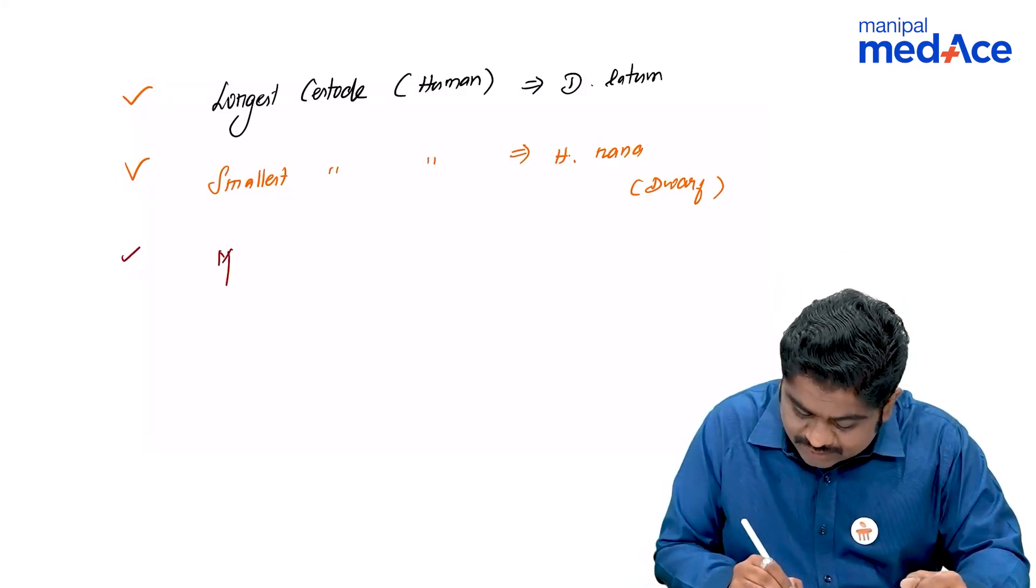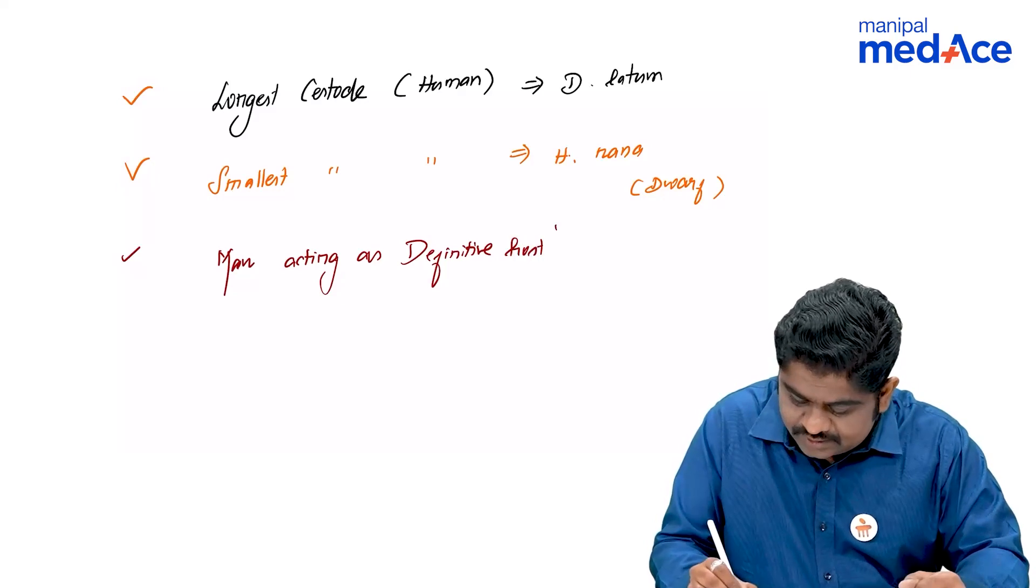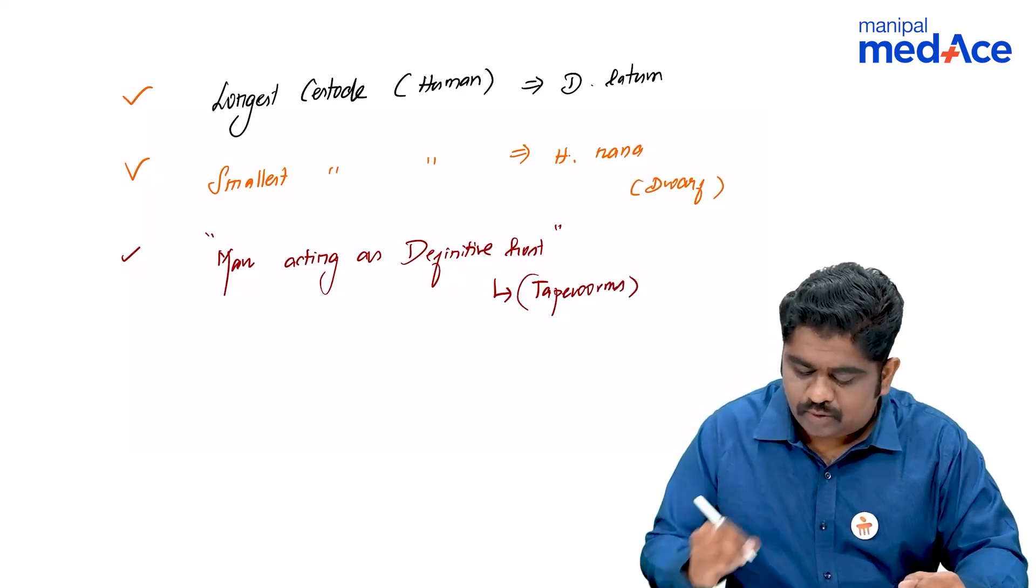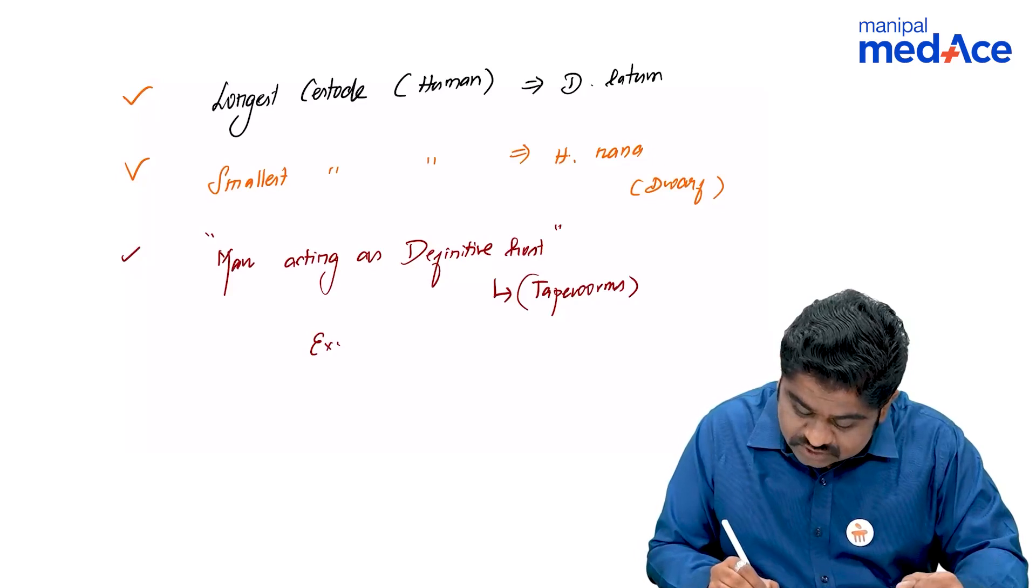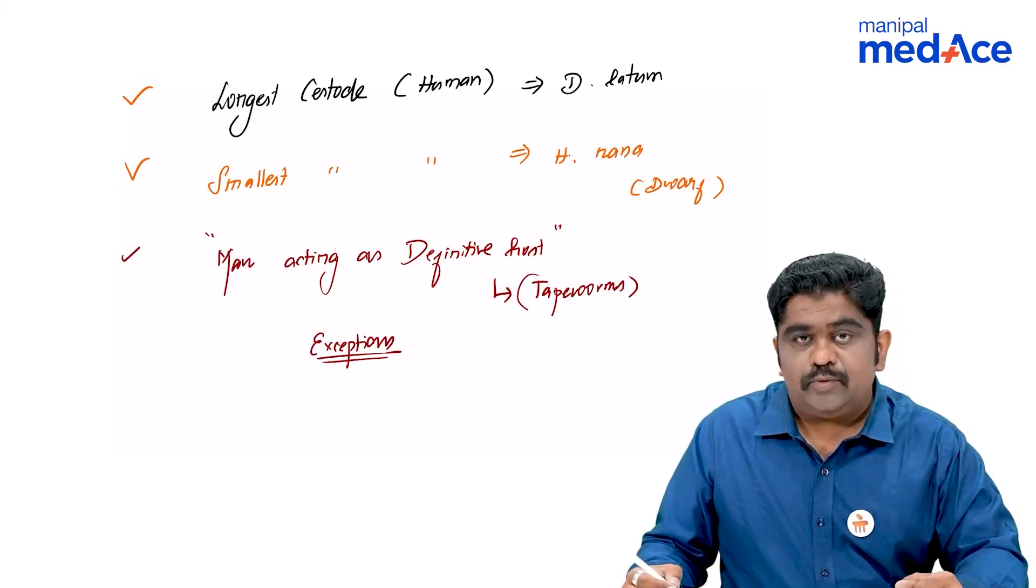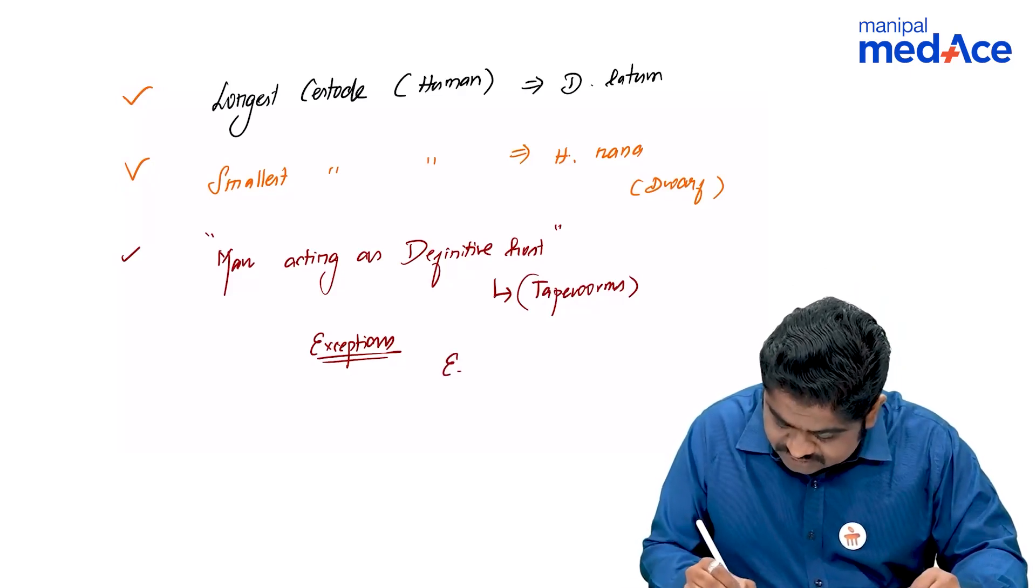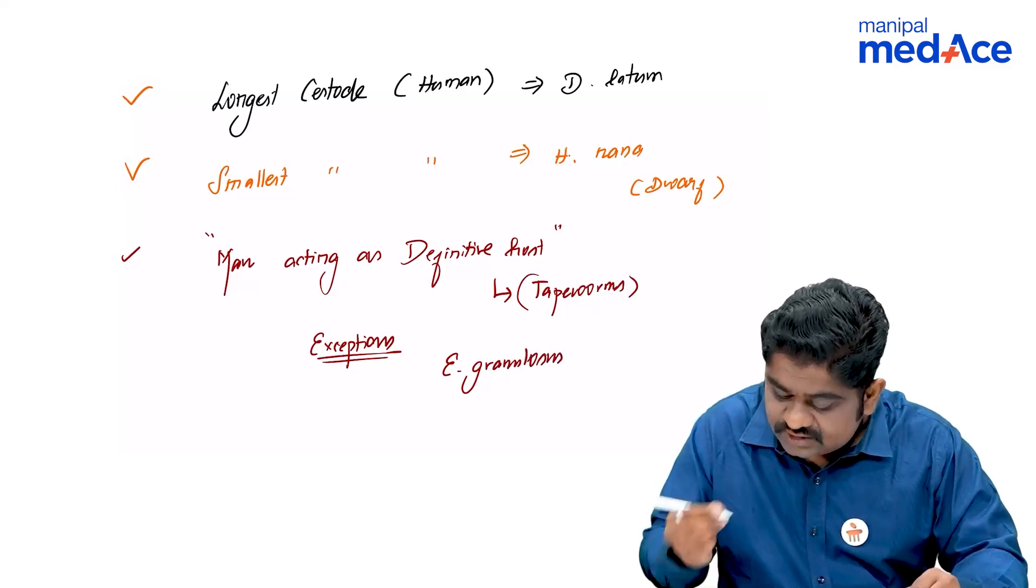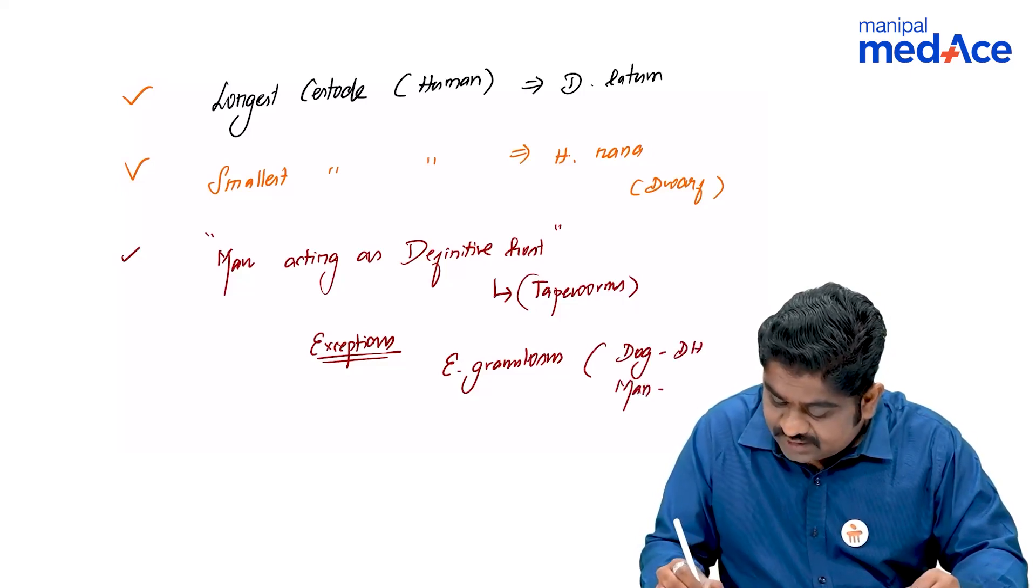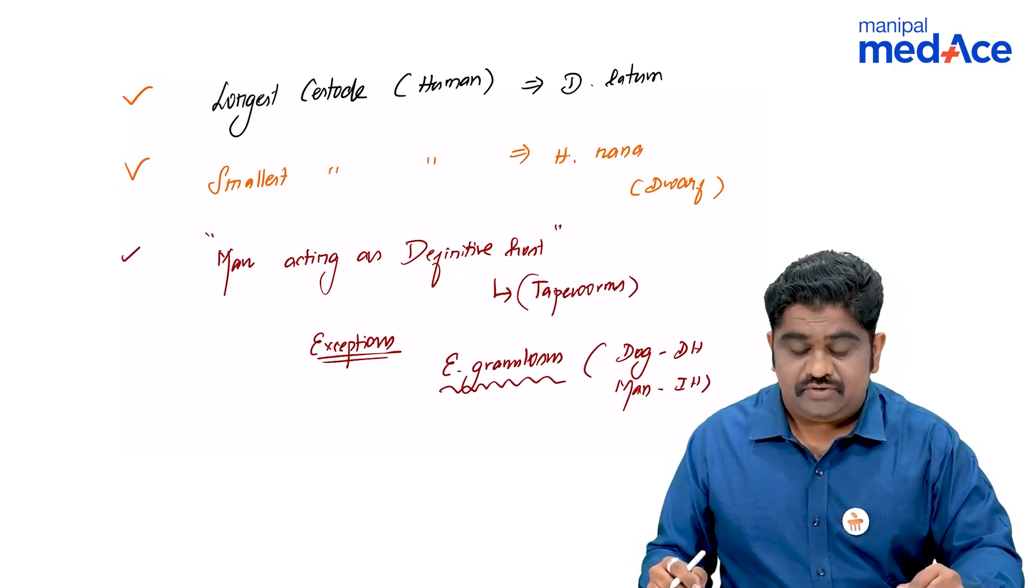Apart from that, you will be having man acting as definitive host. Man is the definitive host in terms of tapeworms. If you focus on tapeworms, man will be the definitive host. But whenever there are rules, you can look for exceptions. We have already discussed about one exception about cysticercus cellulosae, where the human being is suffering from cysticercus where he acts as an intermediate host. Apart from that, it can also be taken into consideration, Echinococcus granulosis. This Echinococcus granulosis will be having dog as the definitive host and man as the intermediate host. And this is a dog tapeworm. This is also necessary information for your exams.